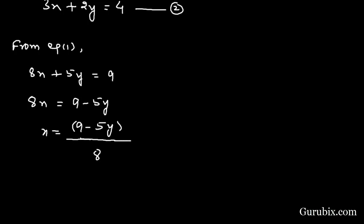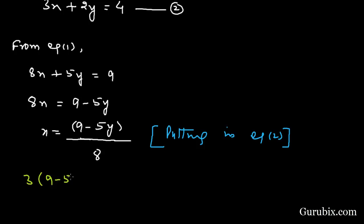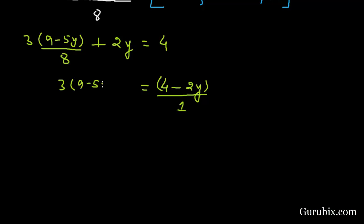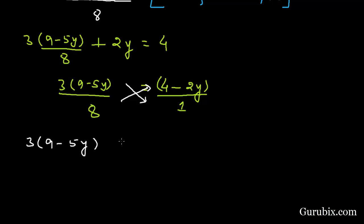Now we shall substitute this value of x into equation number two. Putting in equation two: 3 × (9 - 5y)/8 + 2y = 4. Taking 2y to the right hand side gives 4 - 2y. Writing with denominator 1, we get 3(9 - 5y)/8 = 4 - 2y. Cross multiplying gives 3(9 - 5y) = 8(4 - 2y).